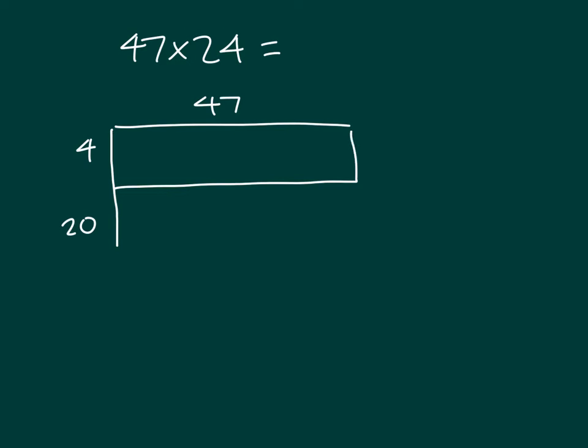Here when we had the problem 47 times 24, we could solve this problem with an area model with just two partial products where we broke apart 24 into 4 and 20. Here this would be 4 times 47, and here it would be 20 times 47 for our partial products.